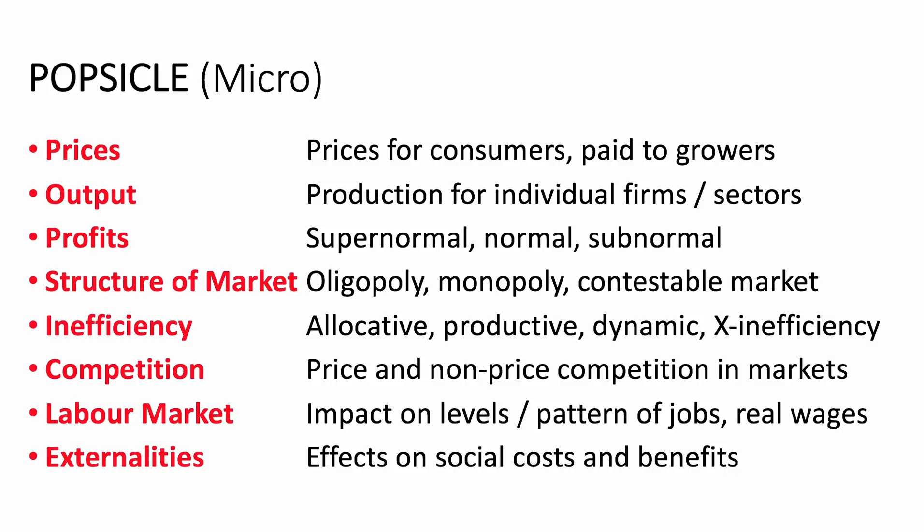POPSICLE for micro stands for: P — Prices. What's the effect of a policy change on the prices paid by consumers or producers? You might get a question about farm subsidies, which affects both consumers and producers. O — Output. What will happen to production for individual firms operating in, say, the car industry? P — Profit. What are the consequences for the level of profit earned by businesses — supernormal, normal, or subnormal? S — Structure of a market: oligopoly, monopoly, perfect competition, or contestable markets.